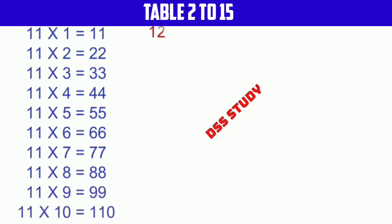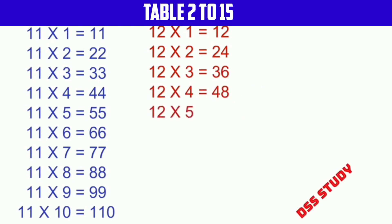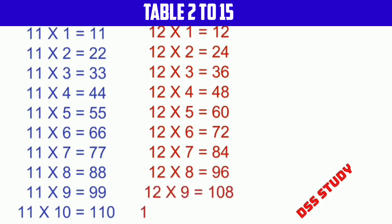12 times 1 is 12, 12 times 2 is 24, 12 times 3 is 36, 12 times 4 is 48, 12 times 5 is 60, 12 times 6 is 72, 12 times 7 is 84, 12 times 8 is 96, 12 times 9 is 108, 12 times 10 is 120.